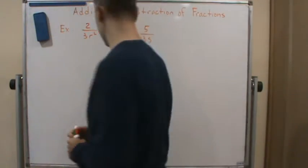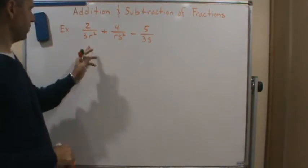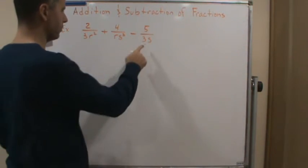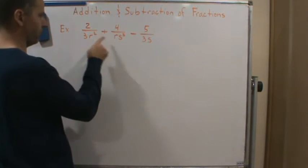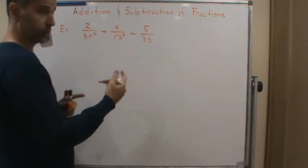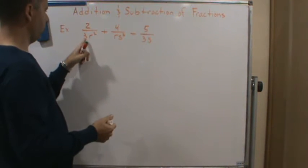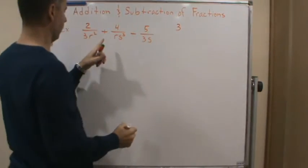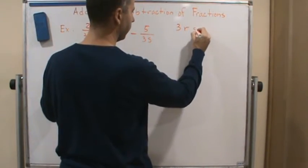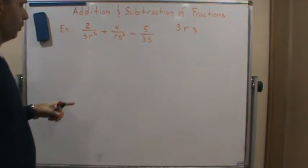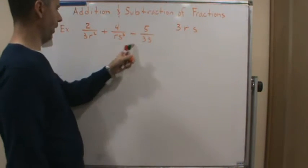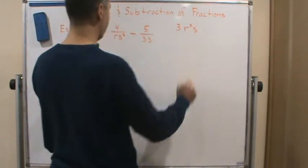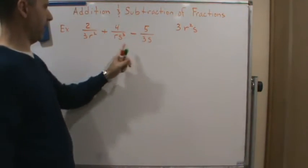We're going to find the lowest common denominator by using the three steps. We want to take each distinct factor - so each different factor. These are all prime factors already, so the three and the r's and the variables are fine. So we have a three, we have an r, and we have an s. What's the highest power of three that we have? One. What's the highest power of r that we have? Two. What's the highest power of s that we have? Three.